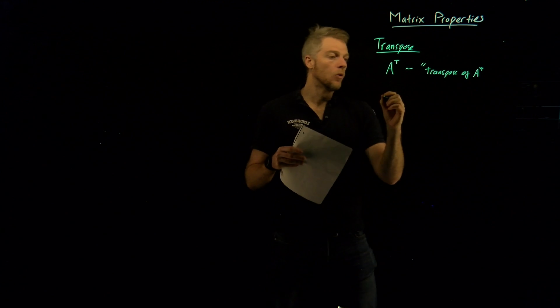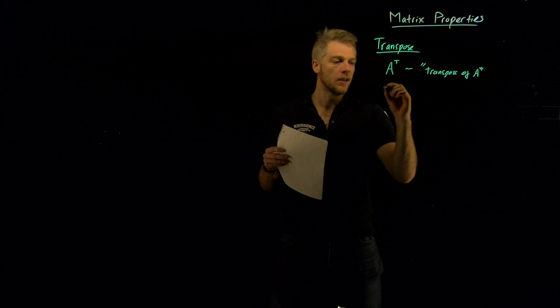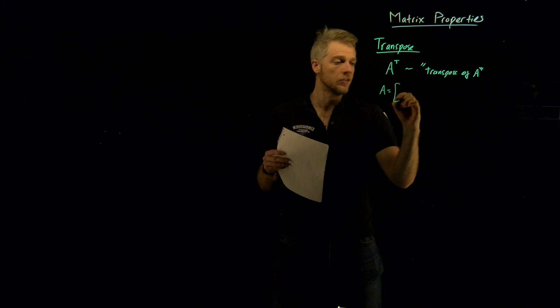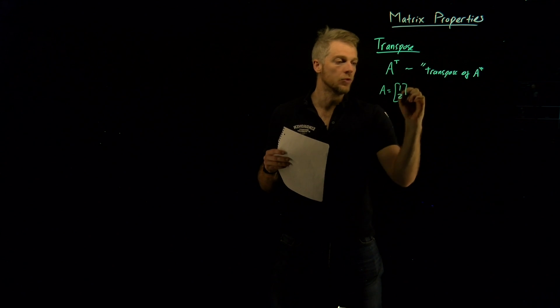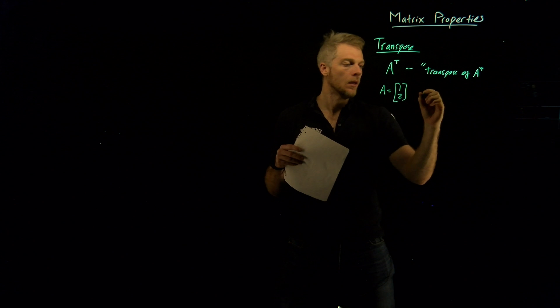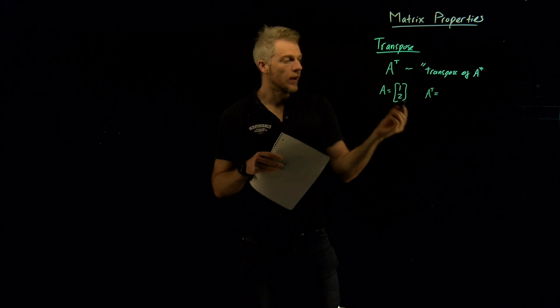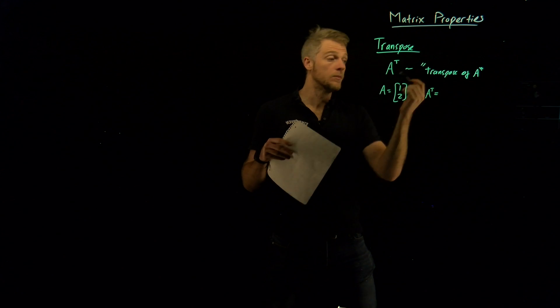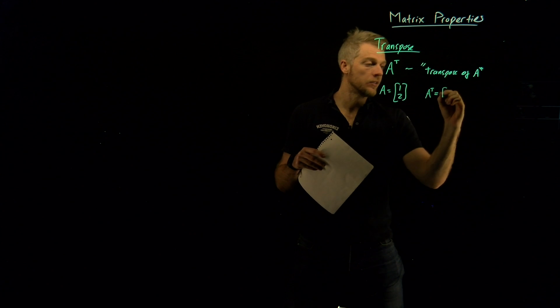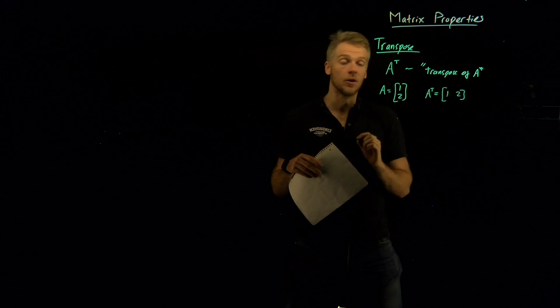Now, in case that doesn't make a lot of sense, let's cover a few different examples. Let's say I have a matrix A, which is not necessarily square, maybe just 1, 2, something like that, or maybe 1, 7, or whatever. Some particular example. What is the transpose of A? Well, the transpose, by definition, turns your rows into columns and your columns into rows. So in this case, the transpose of this matrix would just be 1, 2. We really just flip it on its side.